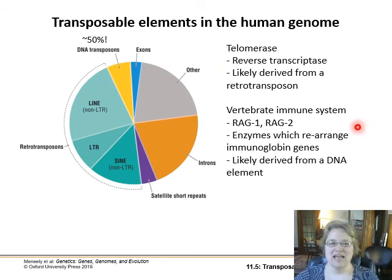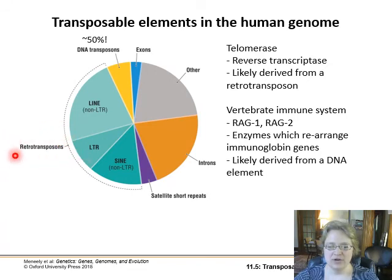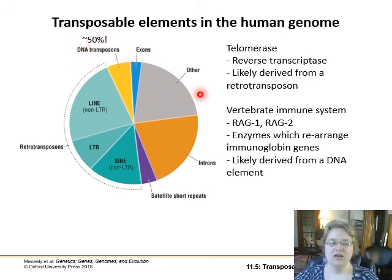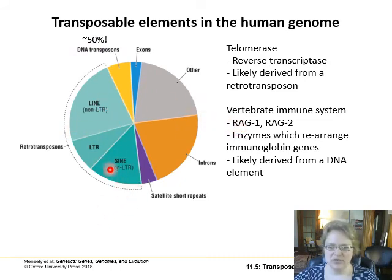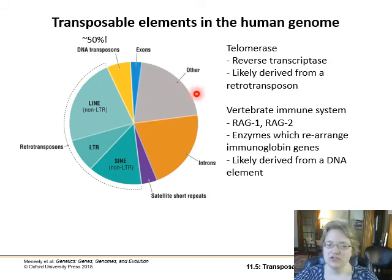Transposable elements make up a lot of our genome. Retrotransposons — class one transposable elements, the RNA ones — make up almost 50% of our genome. Another roughly 10% are DNA transposons. So they are extremely frequent in our DNA, and there are many different kinds.